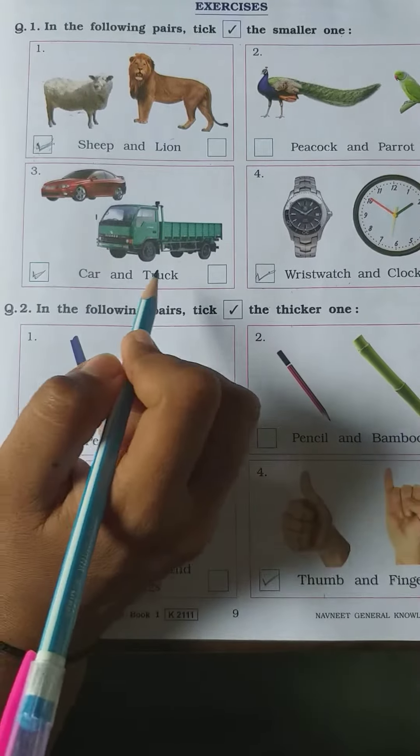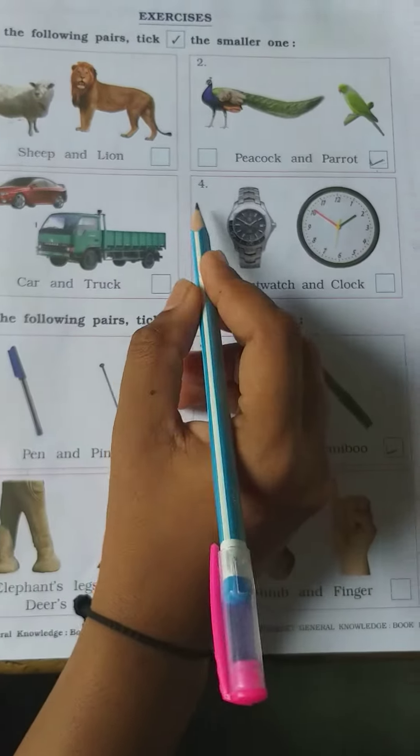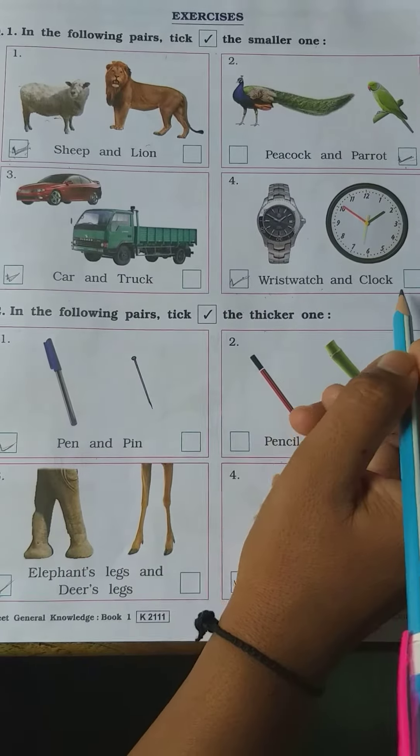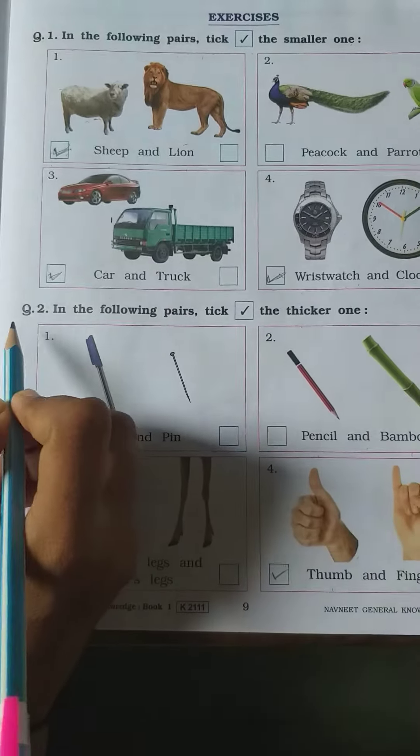Number 3: car and truck. Car is smaller, tick in car. Number 4: wristwatch and clock. Wristwatch is smaller, tick in wristwatch.